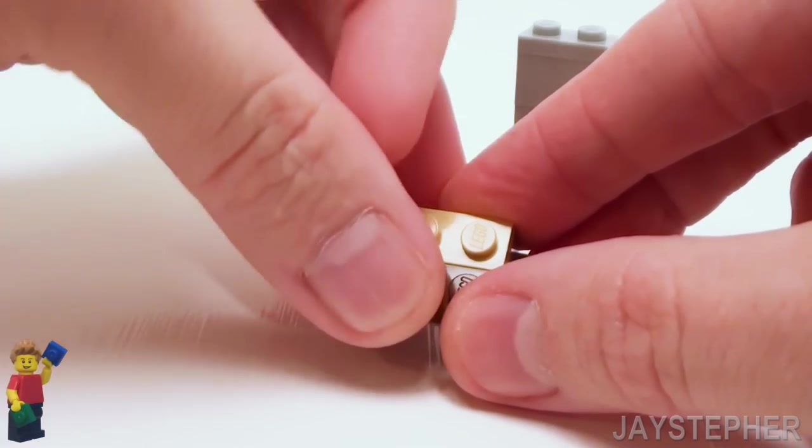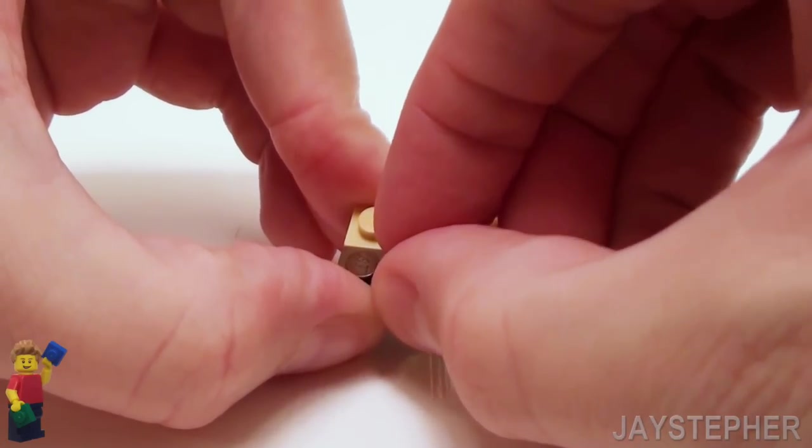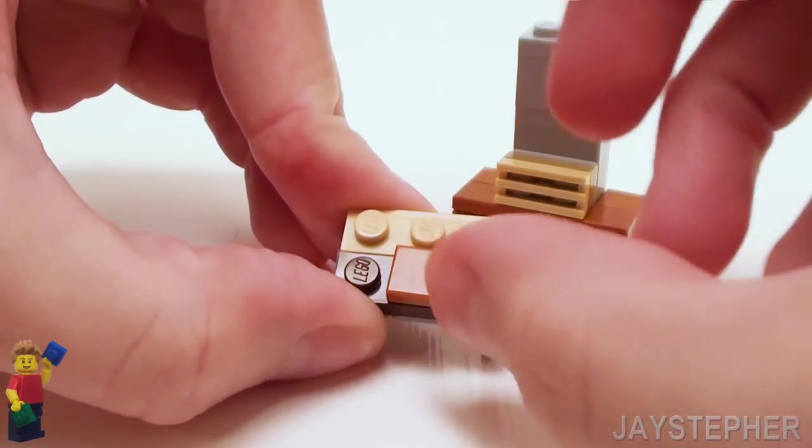Let's place a 1 by 1 flat tile on the bottom and in the center. Make sure this tile is square.